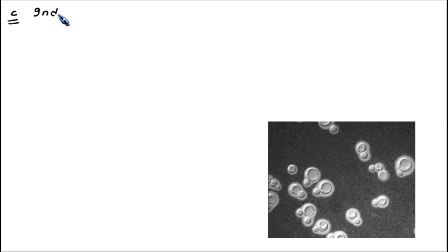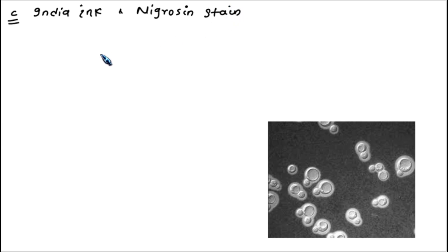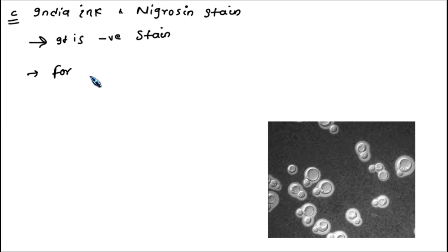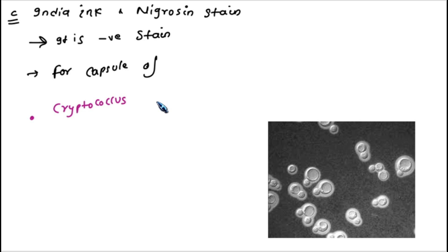The third microscopy technique is India ink or Nigrosin stain. This is a negative stain used for the capsule of Cryptococcus neoformans. It highlights the capsule of Cryptococcus neoformans, as you can see in the picture.